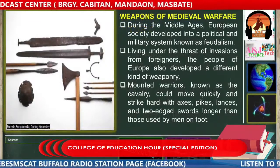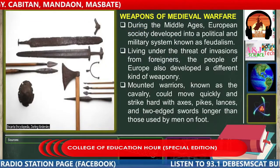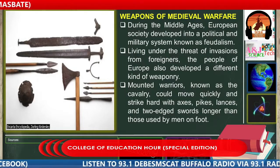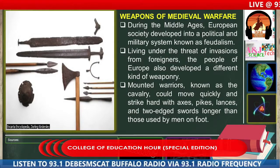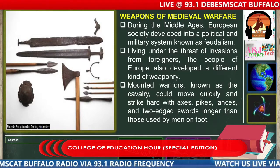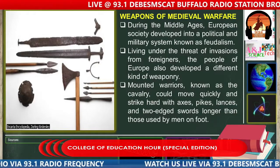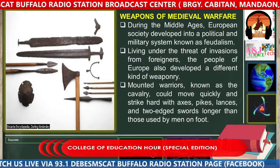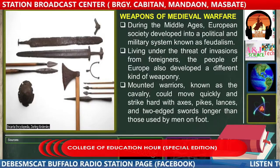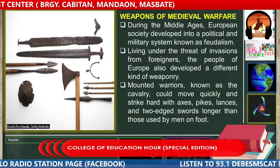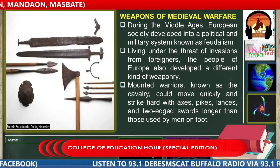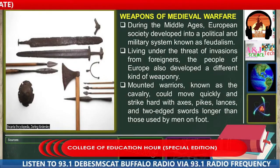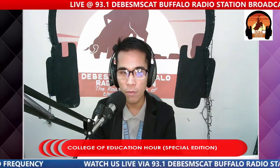Next are the weapons of medieval warfare. You can notice that the weapons are slightly more refined compared to those in ancient times, which were just stones attached to wood. During the Middle Ages, European society developed into a political and military system known as feudalism. Living under the threat of invasions from foreigners, the people of Europe developed different kinds of weaponry. Mounted warriors known as the cavalry could move quickly and strike hard with axes, pikes, lances, and two-edged swords longer than those used by men on foot.